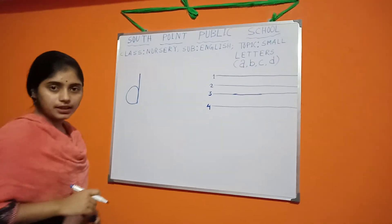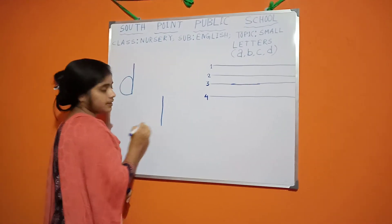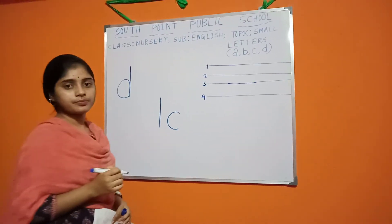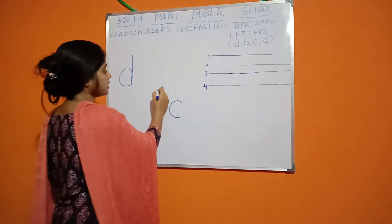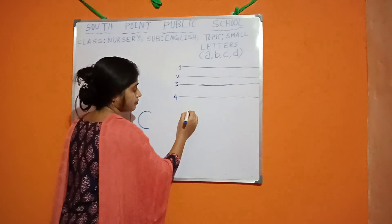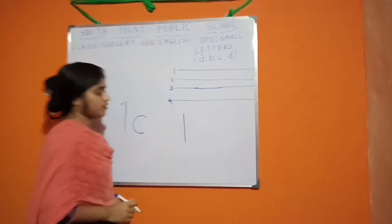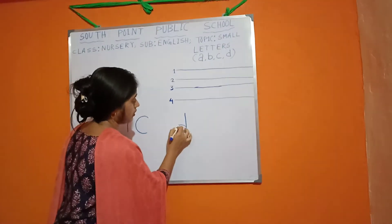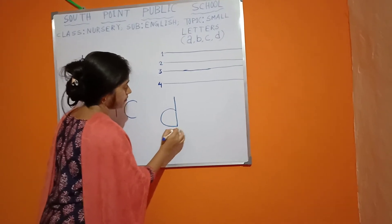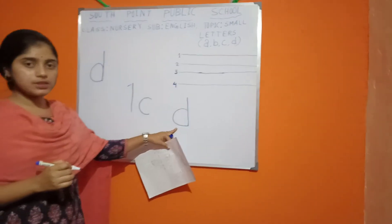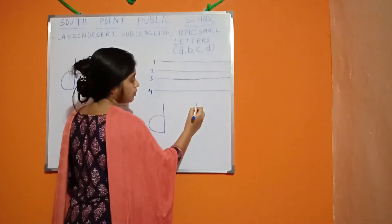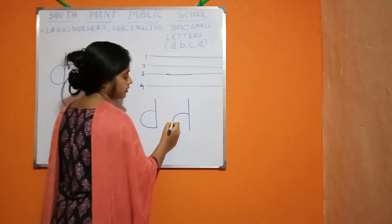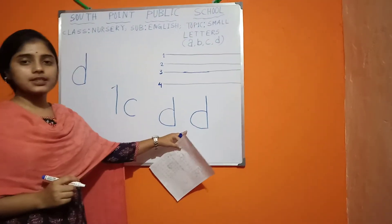To write D, we need one curved line. At first you have to draw this standing line, then the curved line. The curved line joins the standing line. This is D. At first you have to draw one standing line, then the curved line. This is D.